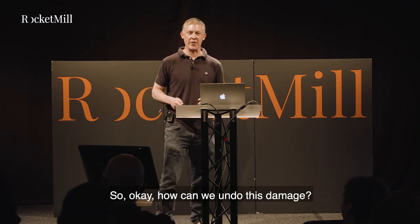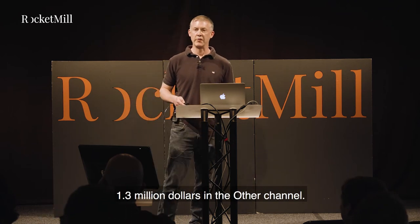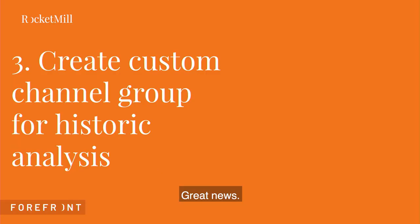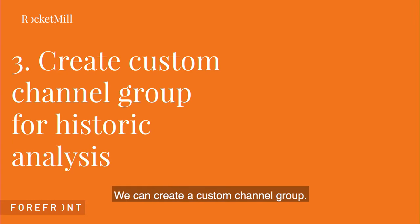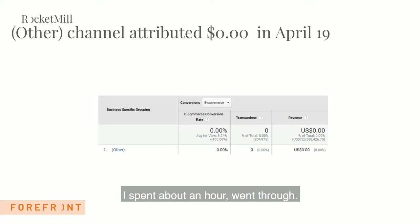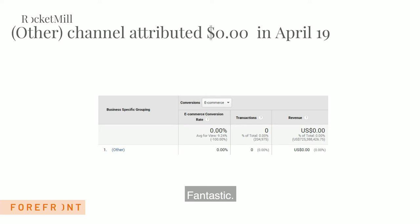So how can we undo this damage if we're the unlucky custodian of 1.3 million dollars sitting in the 'other' channel? Great news: we can create a custom channel group. This is exactly what I did — I spent about an hour going through it, unpicking it all, looking at what they'd done with their custom campaign tagging, tweaking the settings, and lo and behold, we got to where we needed to be.